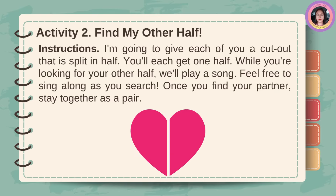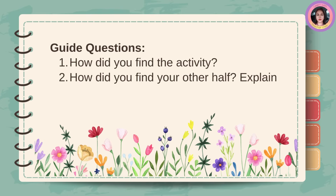Activity 2: Find My Other Half. Instructions: I'm going to give each of you a cut-out that is split in half. You'll each get one half. While you're looking for your other half, we'll play a song. Feel free to sing along as you search. Once you find your partner, stay together as a pair. How did you find the activity? How did you find your other half? Explain.